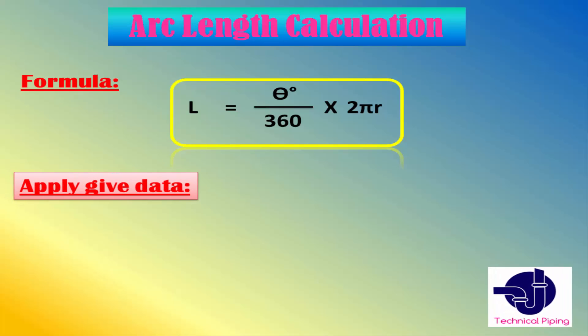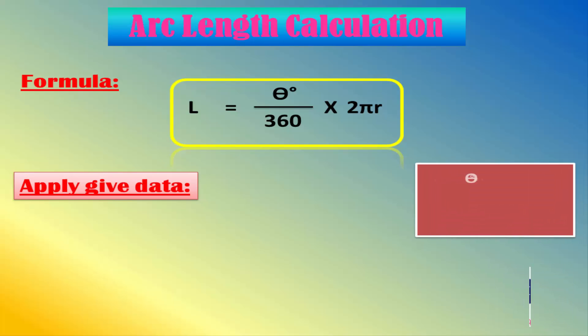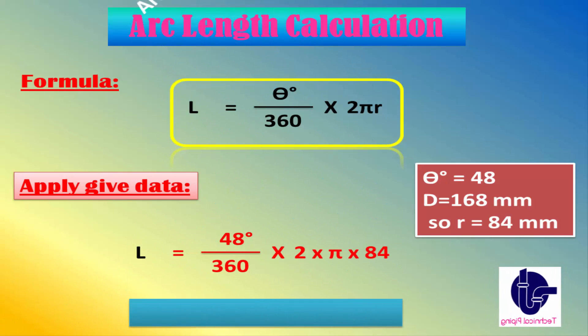Apply the formula here. Diameter converts to radius, so R equals 84mm. Enter the values in the calculator. Finally, you get the arc length of the circle in millimeters.